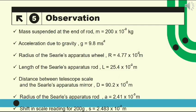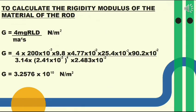List out the observed measurements and findings. By substituting the observed values in the formula, we can find the rigidity modulus of the material of the rod.